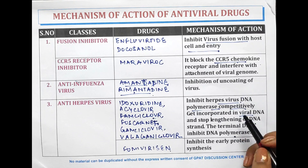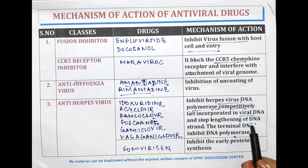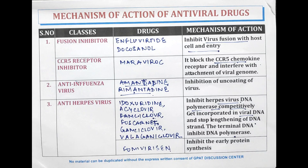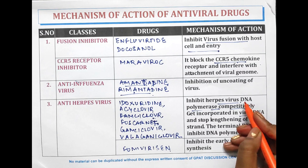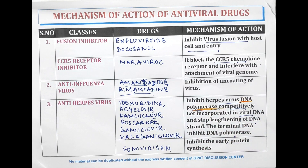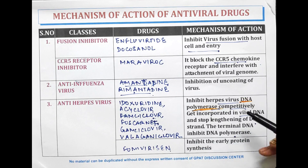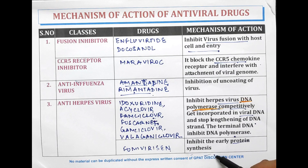The main mechanism of action is that it inhibits the DNA polymerase and inhibits the lengthening of the DNA strand. Fomivirsen inhibits the early protein synthesis.